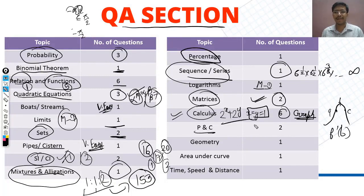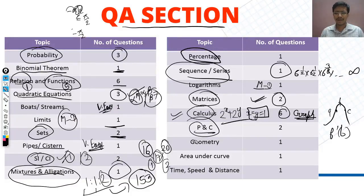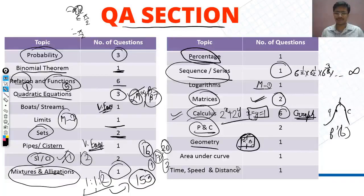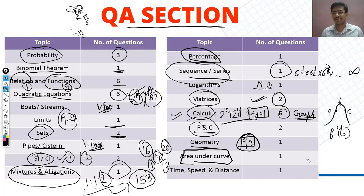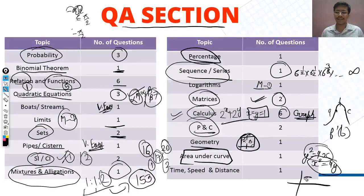Permutation and Combination (P&C) questions were very easy. One question involved selecting 5 or 2 things from 8 distinct items. P&C overall was manageable. Geometry was very easy — in a cyclic quadrilateral you had to find some angles in terms of alpha and beta. Area under the curve was similar to last year's pattern but very easy — the question involved y² = 4x and x² = 4y.